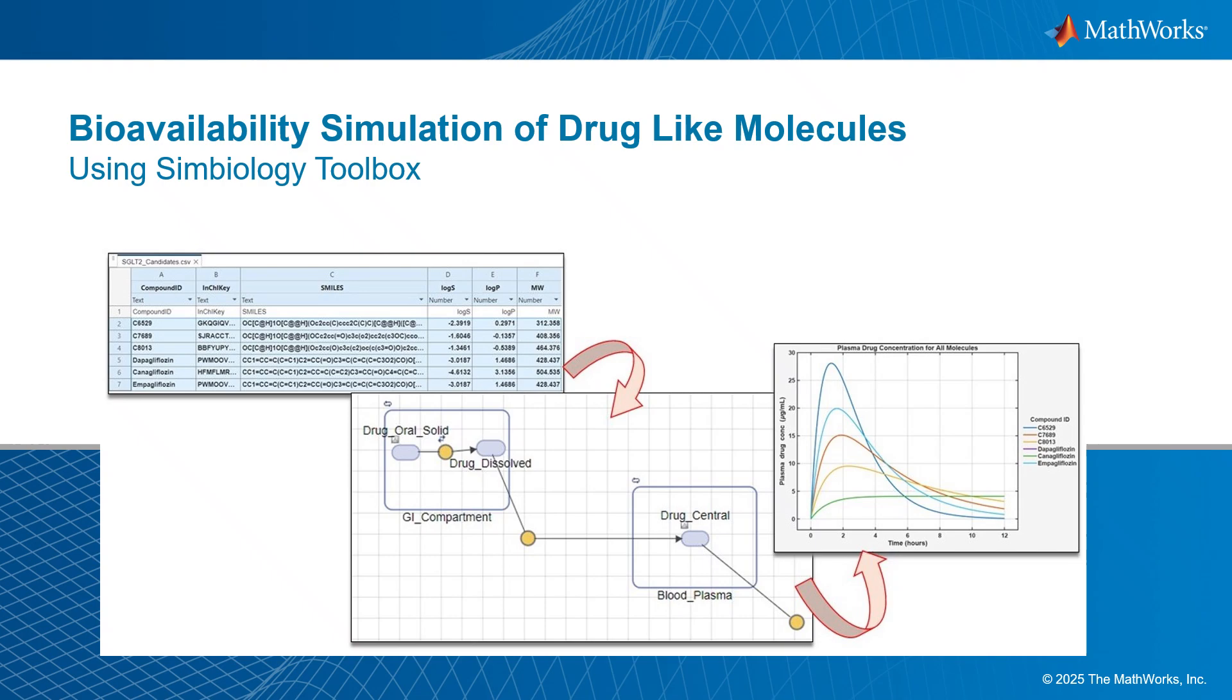Hello and welcome back to another video from our MATLAB for Chemistry video series. In this video we'll explore how molecular properties like log P and log S can influence the absorption and distribution of orally administered drugs. We will use MATLAB's SimBiology Toolbox to simulate a simple pharmacokinetics model that connects these properties to drug bioavailability. This provides a powerful starting point for early stage drug screening and absorption.